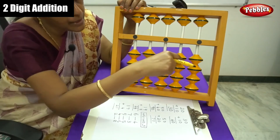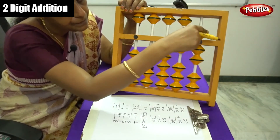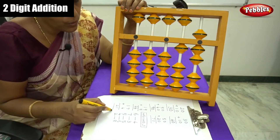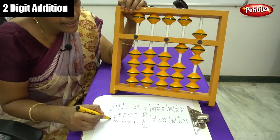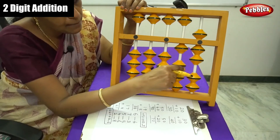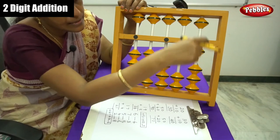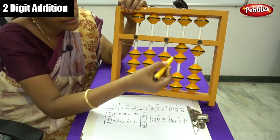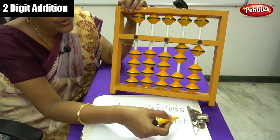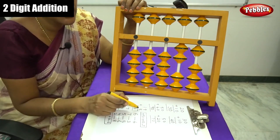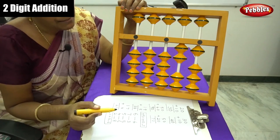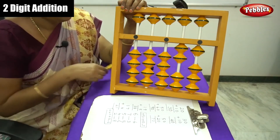Let me show you again: 17 plus 4. For plus 4, write down plus 10 minus 6. The answer is 21. I hope you children can now do two-digit plus two-digit zero-ending number addition and two-digit plus single-digit number addition using these formulas. We will move on to three-digit addition numbers in the next video.